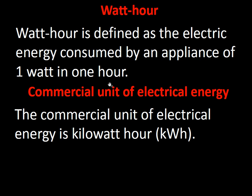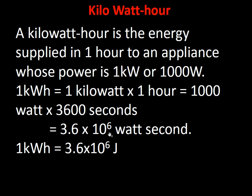Watt-hour is the electrical energy consumed by a 1-watt appliance in one hour. The commercial unit of electrical energy is the kilowatt-hour (kWh), also called one unit on the electricity meter. One kilowatt-hour equals 1 kW × 1 hour = 1000 W × 3600 s = 3.6 × 10⁶ watt-seconds = 3.6 × 10⁶ joules.